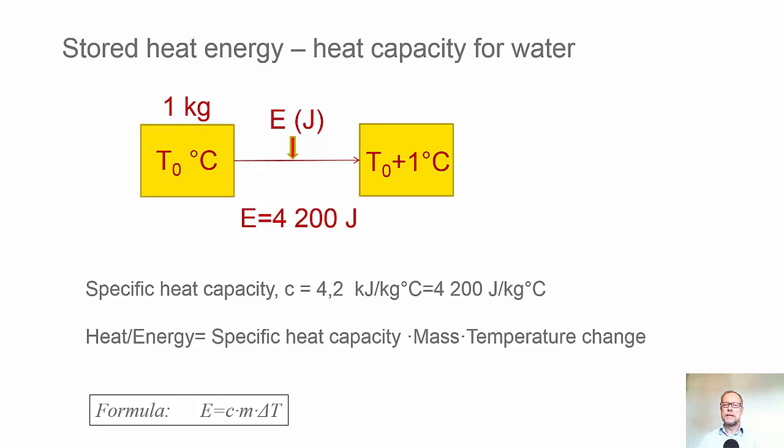Heat capacity is used to specify how much energy is required to increase the temperature of a substance. The picture shows one kilogram of water in this example with an initial temperature of T0. In order to increase the temperature by one degree Celsius, it requires 4200 joules or 4.2 kilojoules. The specific heat capacity c is equal to 4.2 kilojoules per kilogram per degree C.